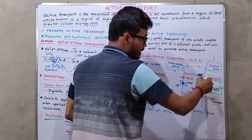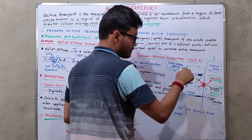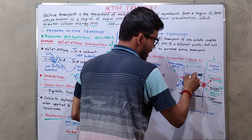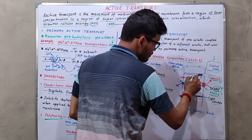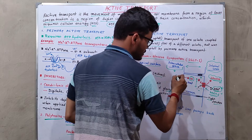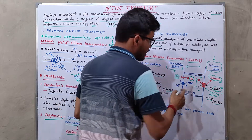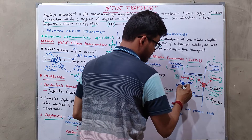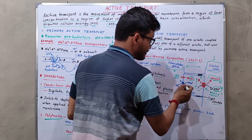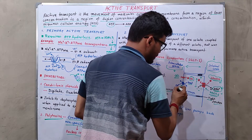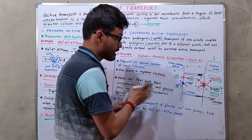After uptake by SGLT1, specific transporters are activated and transport glucose from the cytosol to the intercellular space. Primary active transporters are also activated and transport sodium and potassium ions against their concentration gradient, as described earlier.